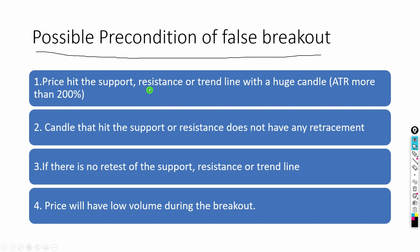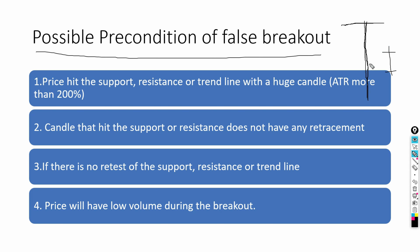The first precondition: if price hits support, resistance, or a trend line with a huge candle — ATR more than 200%. When you see a candle with a very big move hitting a resistance, and the ATR of that candle is far greater than the average ATR, there is a high likelihood that price will come back into the range to create a false breakout.